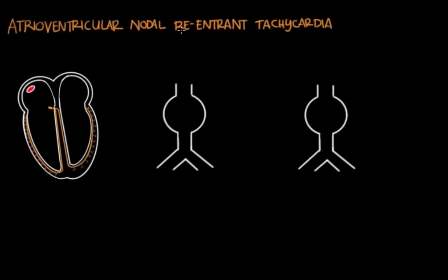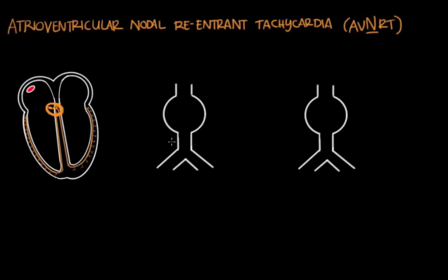Atrioventricular nodal reentrant tachycardia, or AVNRT, is another type of reentrant tachycardia like AVRT, but with important differences. It's called nodal because the abnormal reentrant circuit directly involves the AV node and the tissue right around it — there is no accessory pathway in AVNRT. The circuit involves the AV node itself, the His bundle, and the conduction system going down into the ventricles.